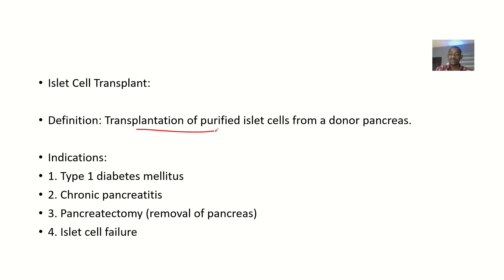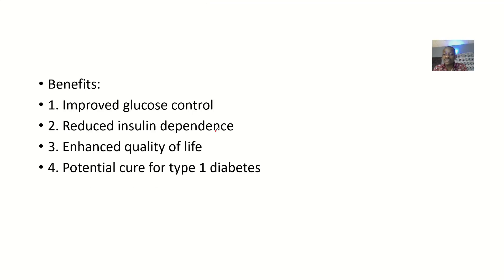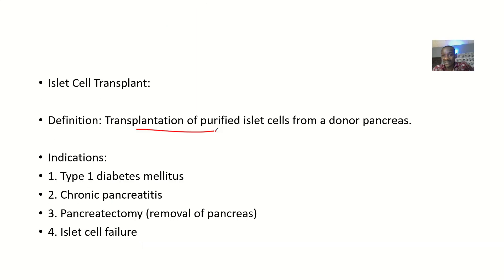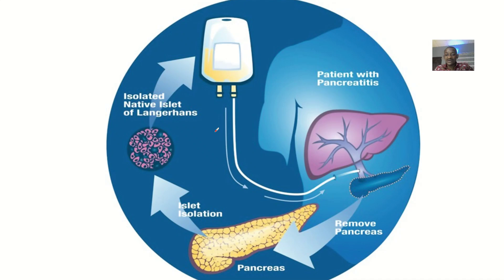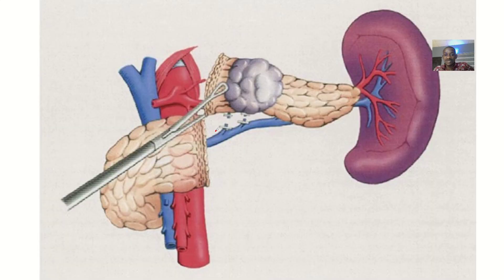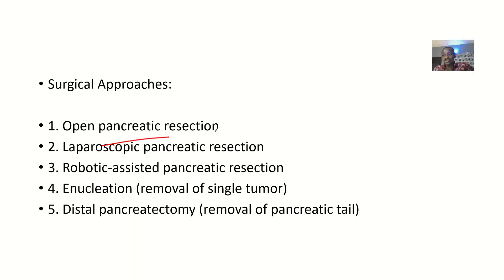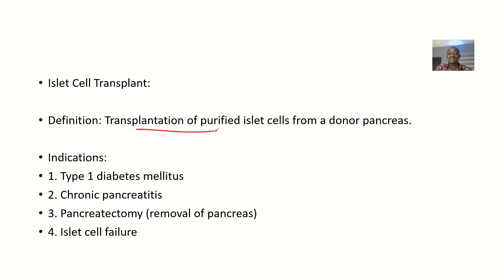Now talking about islet cell transplant — it's basically transplanting purified islet cells from a donor to a receiver. They take islet of Langerhans cells from somebody else and put them into another person. The indication is if somebody has type 1 diabetes mellitus, you might want to do this type of surgery for them.